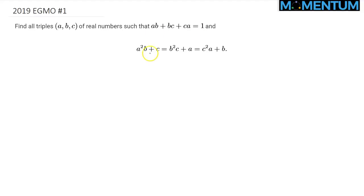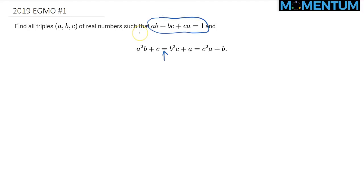We have three unknowns, A, B, and C, and as you can see, we have three equations as well. So that should be sufficient to solve these unknowns. We can do direct substitution, or we can start with one of the equations and try to liken the expression to another one so that we can ultimately substitute. Alternatively, I would like to do the following.